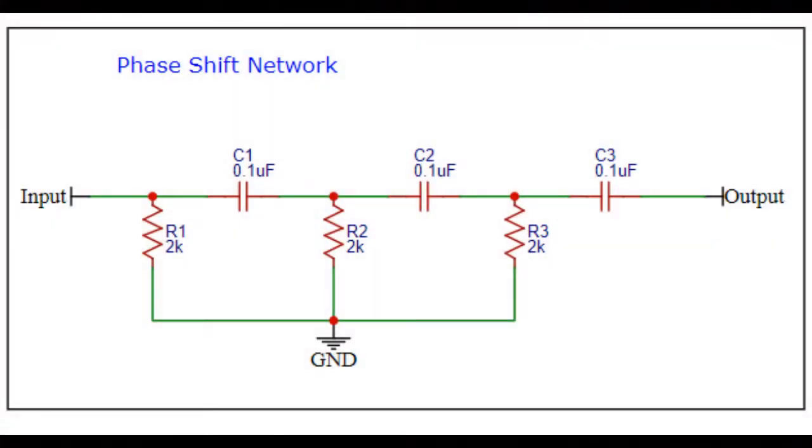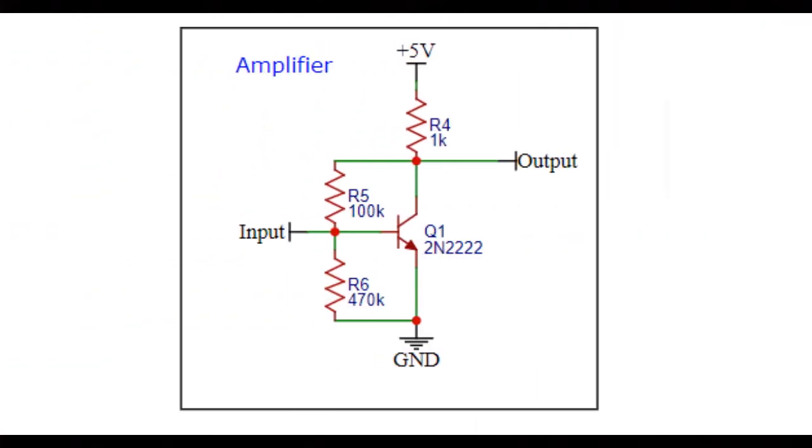The oscillator consists of two parts, a phase shift network made up of resistors and capacitors, and an amplifier, in this case a transistor amplifier.